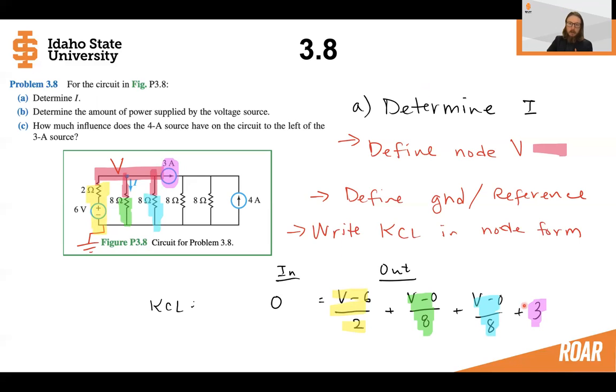And I've just highlighted where each one of these is coming from. So you can see that the yellow part, this part of the KCL node voltage equation came from the yellow part, the green, and so on.